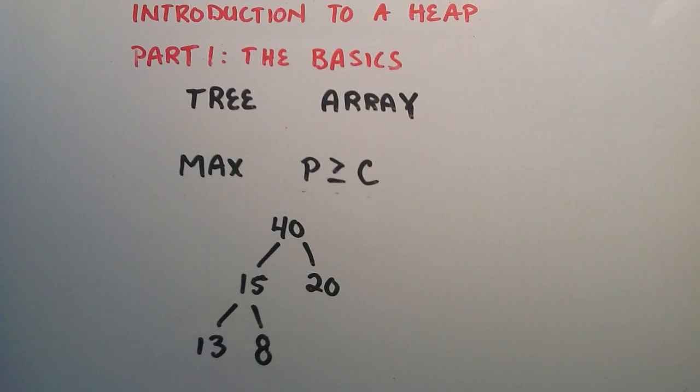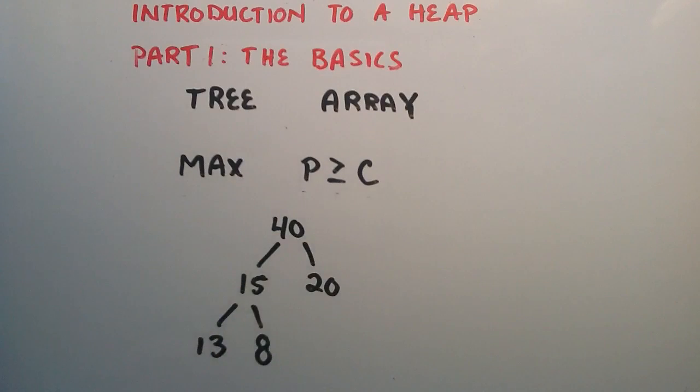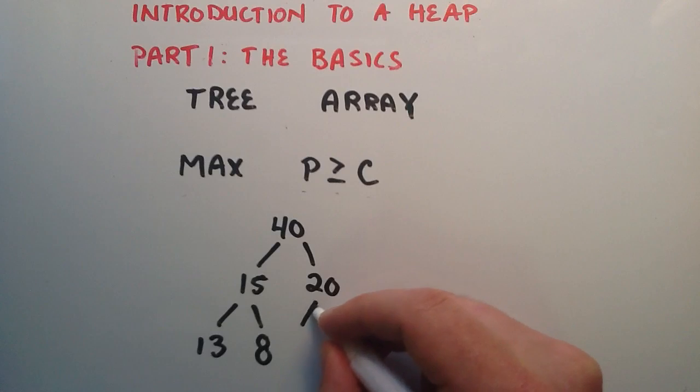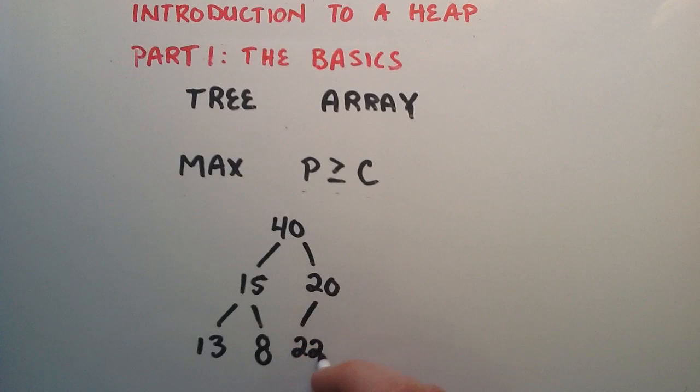So what happens when we need to add an item that violates this rule? Because when we add an item, we have to add it to the left most available spot. So if we needed to add the item 22, we would have to add it here, because that is the left most available location. So we add the 22 here, and when we add a new item, we compare its value to its parent.